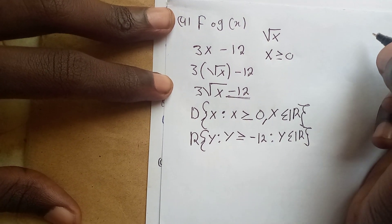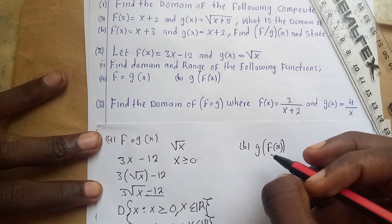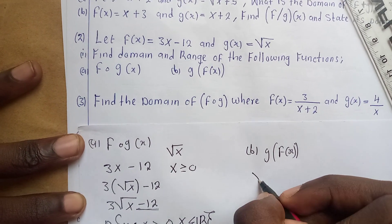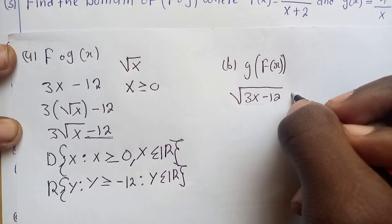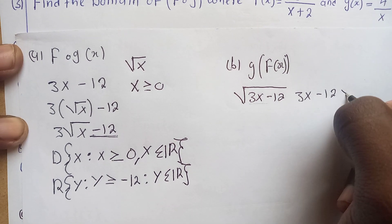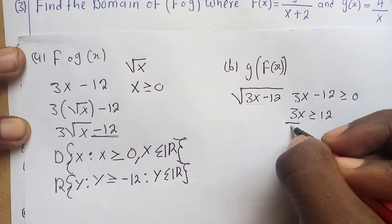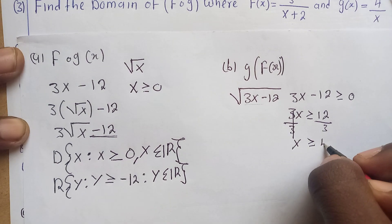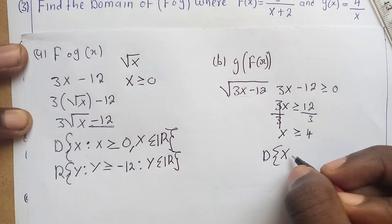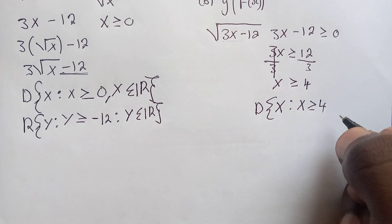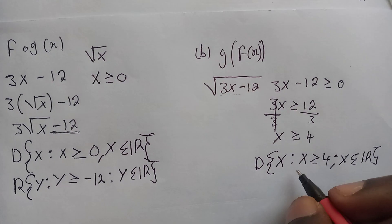For part (b), we find g∘f(x). We take g(x) = √x and substitute f(x) = 3x − 12 inside, giving √(3x − 12). We set 3x − 12 ≥ 0, so 3x ≥ 12, dividing by 3: x ≥ 4. The domain is: x is such that x ≥ 4 and x is a member of all real numbers.